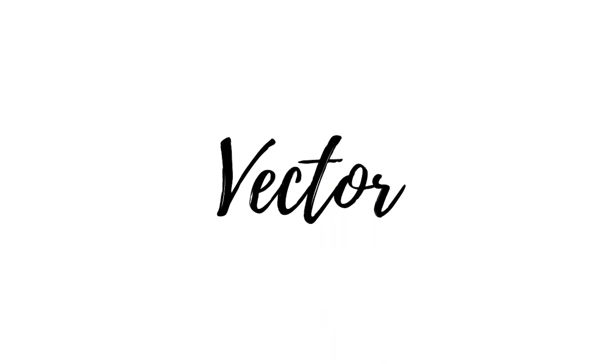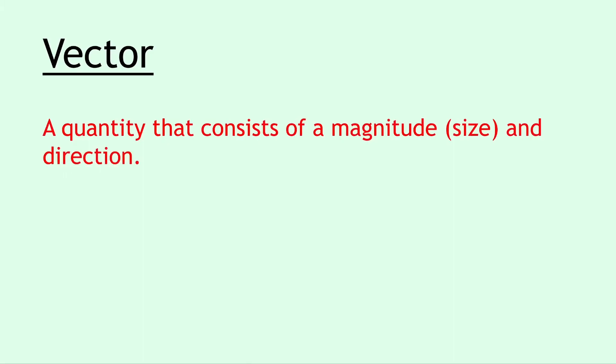To kick off the dynamics definitions, we have the term scalar. A scalar is a quantity that consists of a magnitude or size only. And this is different to a vector, which is a quantity that consists of a magnitude, i.e. a size, and a direction. So direction is important for vectors.